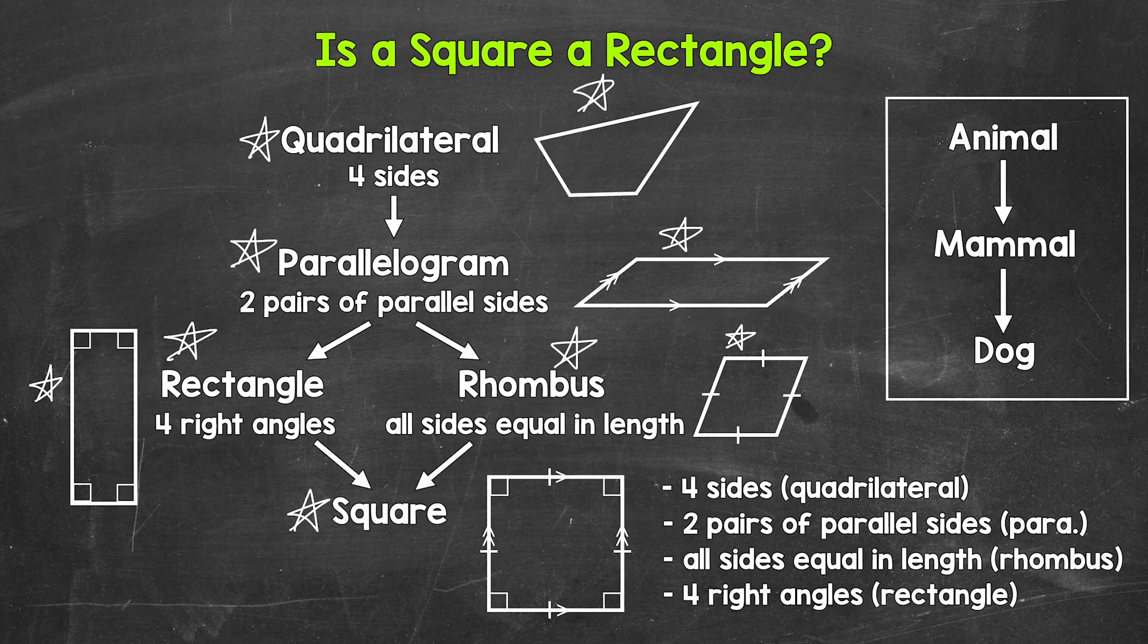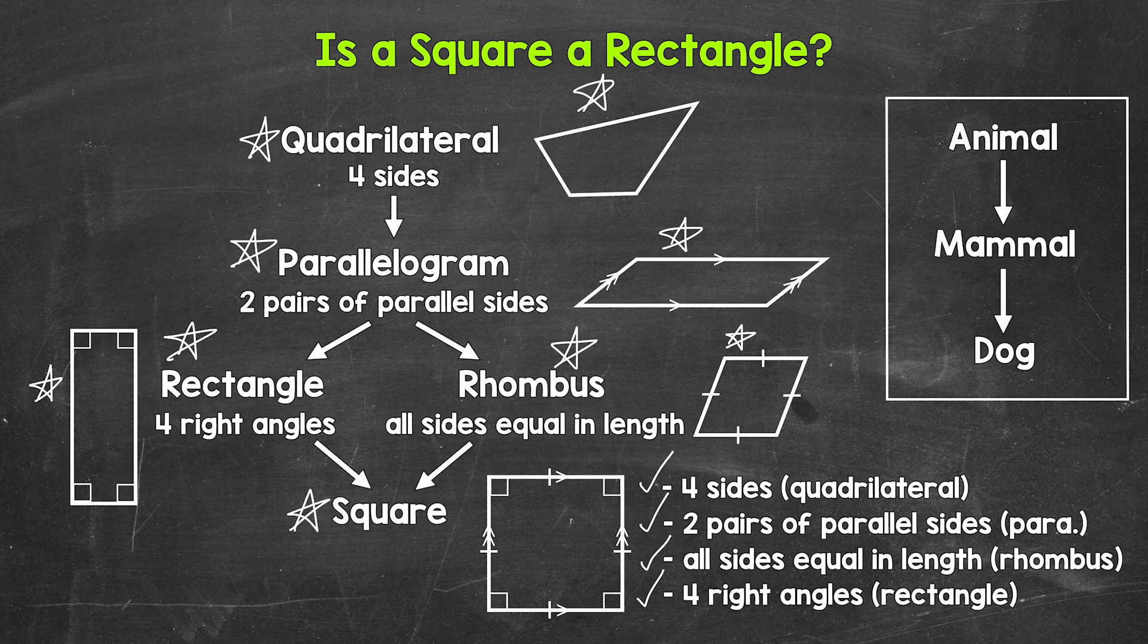So to recap here, a square is a quadrilateral. A square is a parallelogram. A square is a rhombus. And yes, a square is a rectangle.